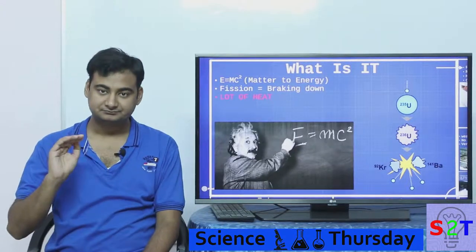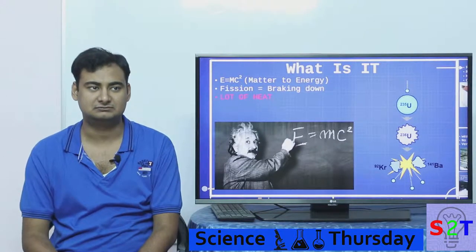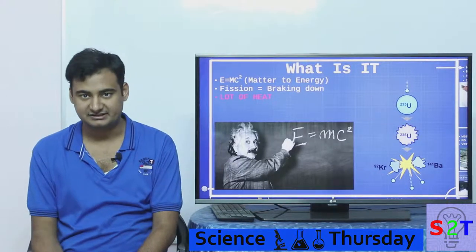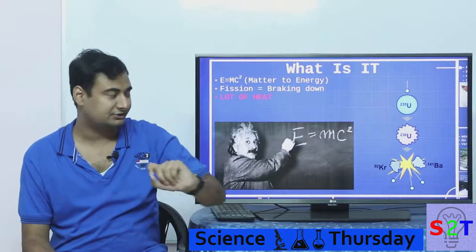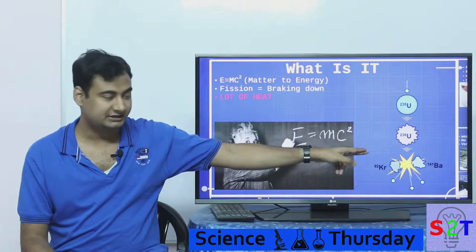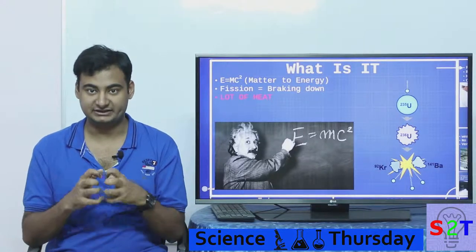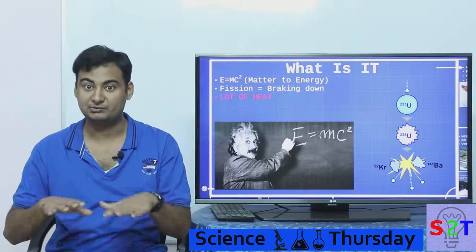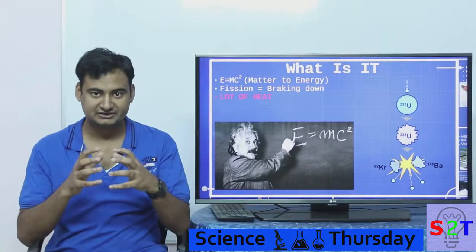If you have seen the periodic table, on the bottom row there are a lot of heavier elements — those elements are almost what you would call unstable. Not every element there is unstable, but if you take uranium, you add one neutron to it and it goes from 235 to 236, it becomes unstable. The energy content becomes unbalanced — it wants to stabilize itself, like how you heat water up and it wants to reach equilibrium.